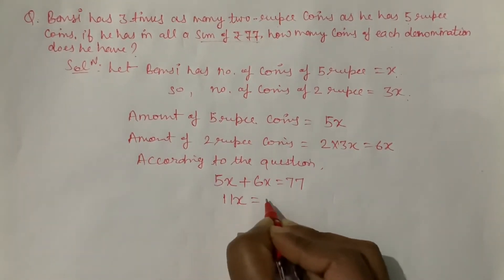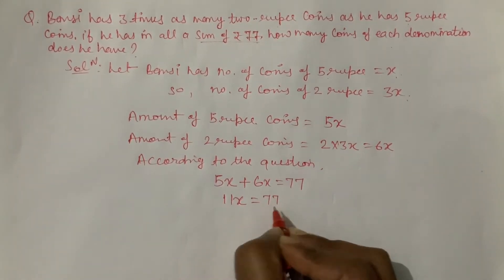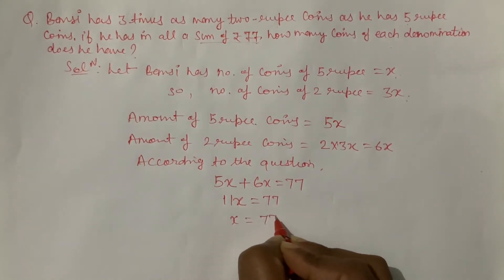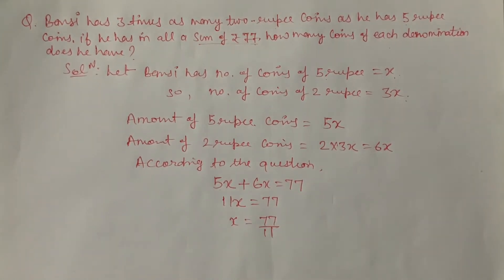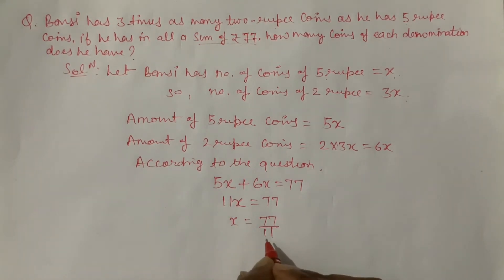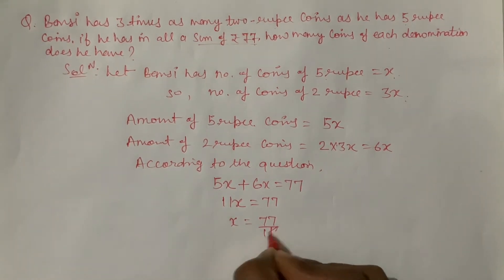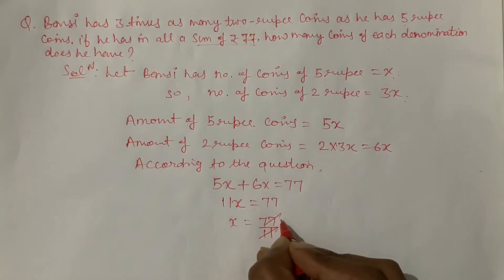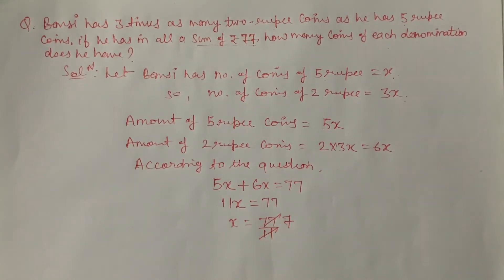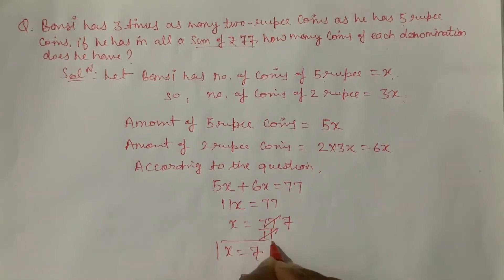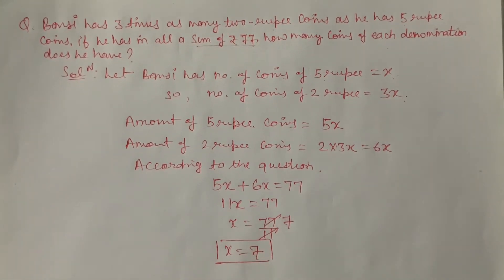5 aur 6 kitna ho jayega — 11x = 77. Ab x ki value nikalo: x = 77 upon 11. 11 divide mein chala jayega. 11 sevens are 77. Toh x ki value kya aayi — 7.